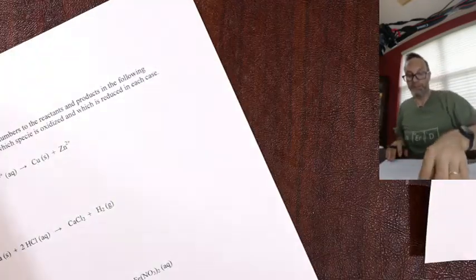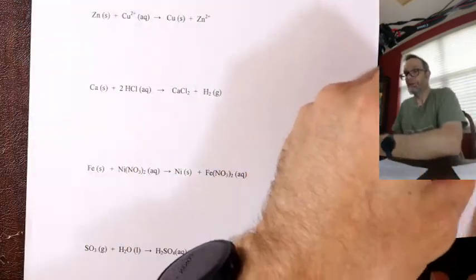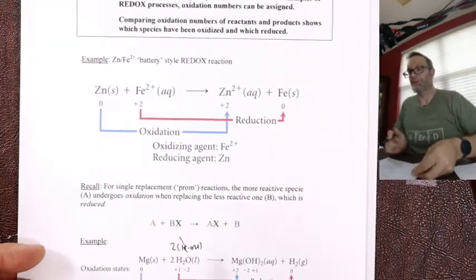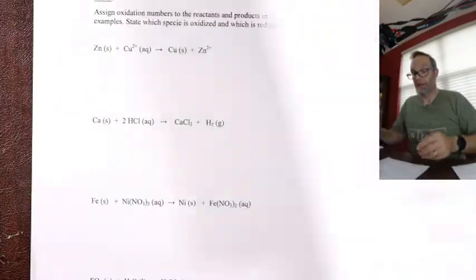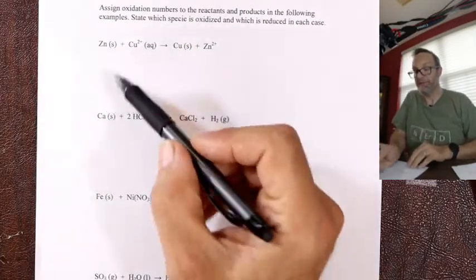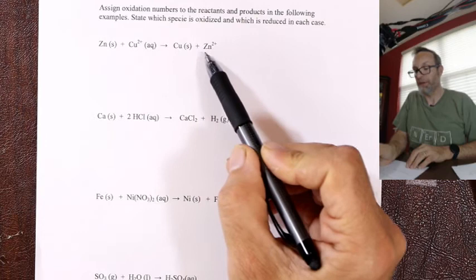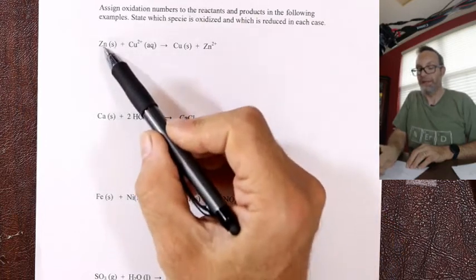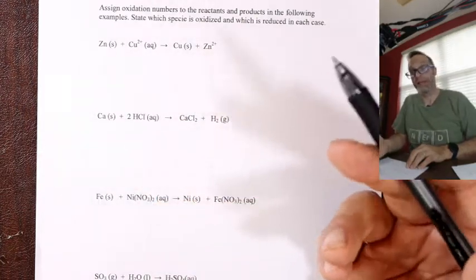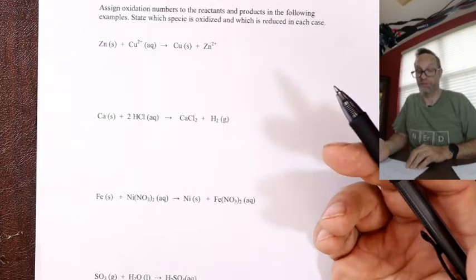Assign each thing an oxidation number, then think: it went from here to here — is that loss or gain? Then just assign oxidation or reduction.